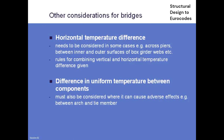The Eurocode also introduces a horizontal temperature variation — not to be used on all structures, really intended for masts and things like cable-stay bridge pylons or very tall piers where there must be differential temperature because the sun shines on one side. It also introduces a difference in uniform temperature between different parts of the structure — for example, an arch bridge where the arch rib might be 10 degrees hotter than the deck. For a normal bridge you wouldn't need to consider a temperature difference between components, so things are really the same as before.